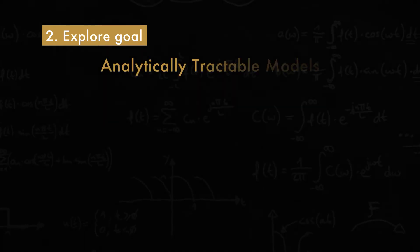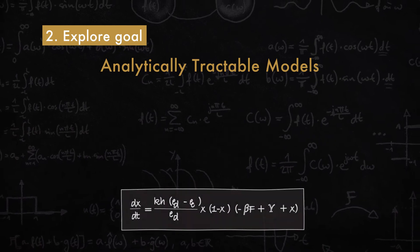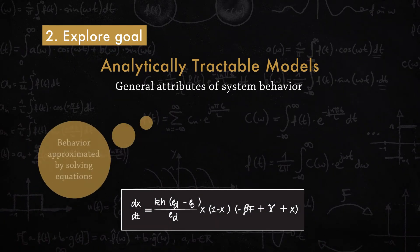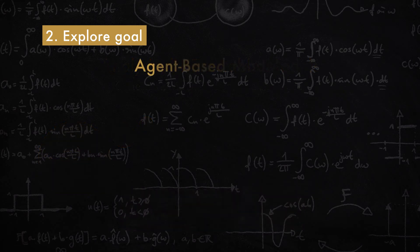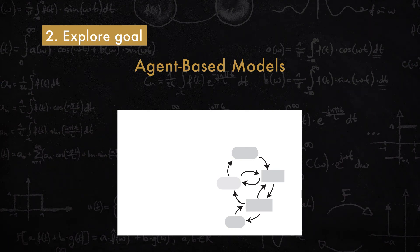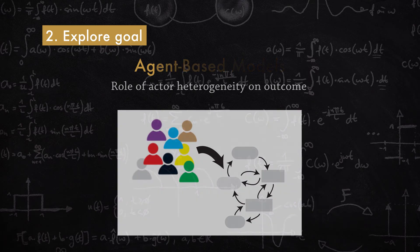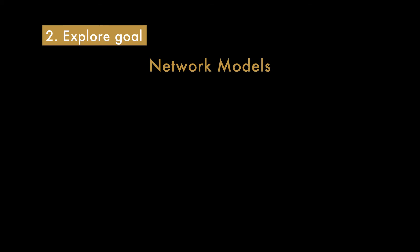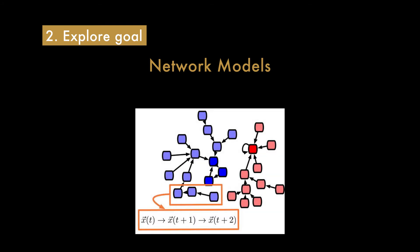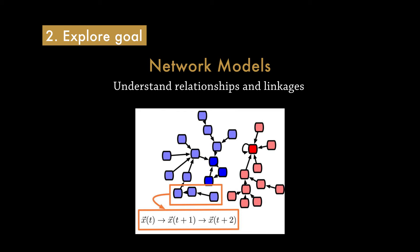To understand and explore an SE system — the second goal category — modeling teams sometimes use simple analytically tractable mathematics to understand the general attributes or dynamics of the system. Often, socio-environmental modelers use agent-based models, or ABMs. This is really useful if the goal is to understand how heterogeneity within a group of actors influences modeling outcome — useful for socio-environmental systems because how people behave and make decisions can be very different due to historical contingencies, different contexts, or other factors. A network approach is also often used when the goal is exploratory or descriptive modeling, especially by social scientists, and is useful in understanding interactions and linkages between social actors.